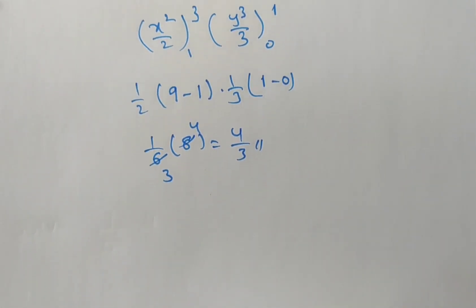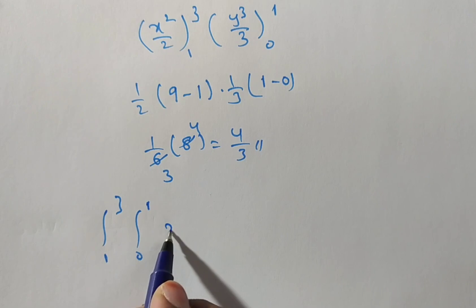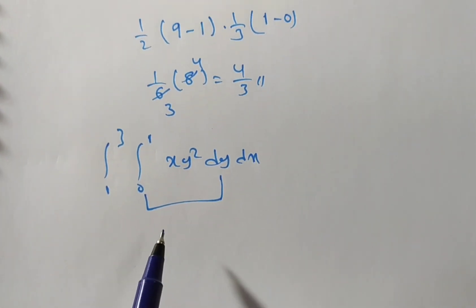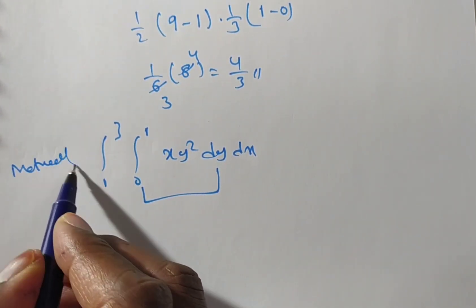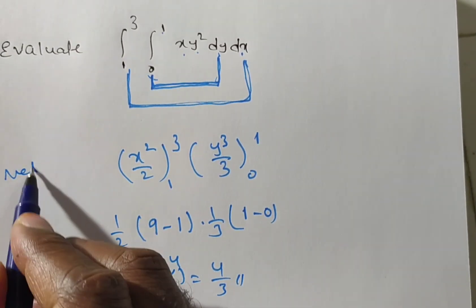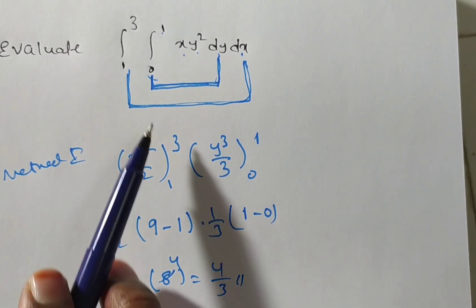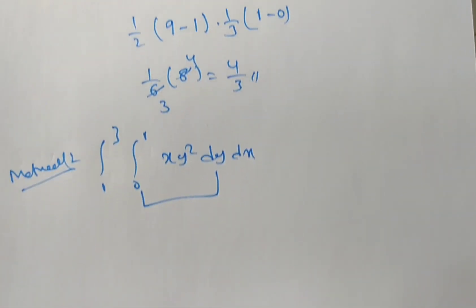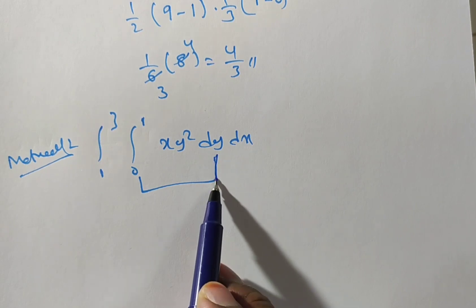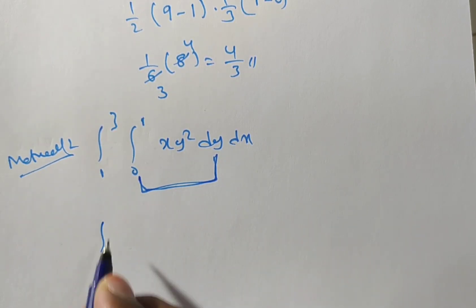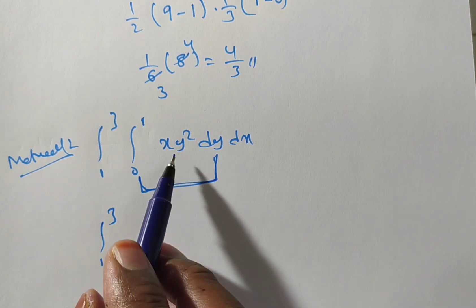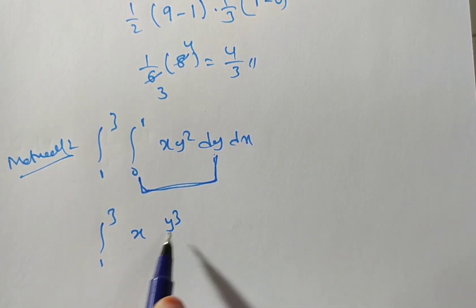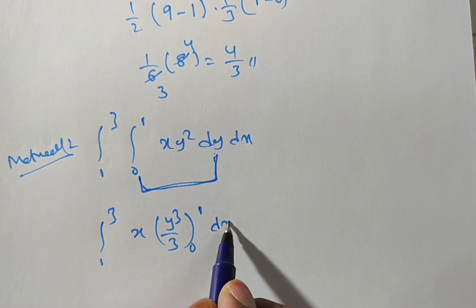Now, the same problem using the general method — Method 2. Integral 1 to 3, integral 0 to 1, x y squared dy dx. First, integrate with respect to y, treating x as a constant. y squared integrates to y cubed over 3, with limits from 0 to 1, multiplied by dx.